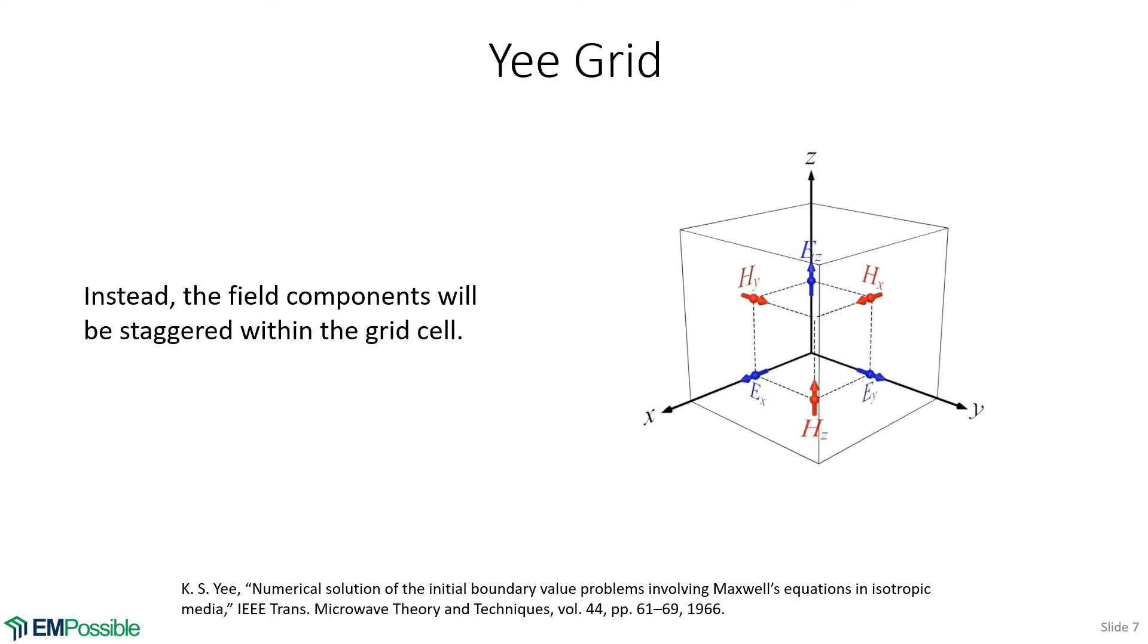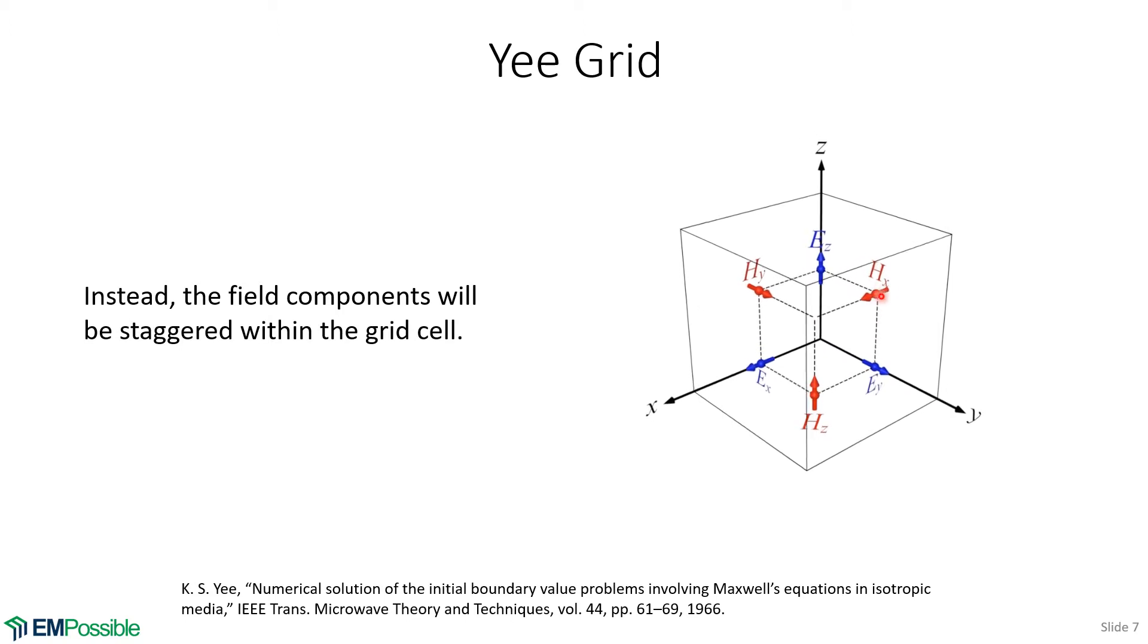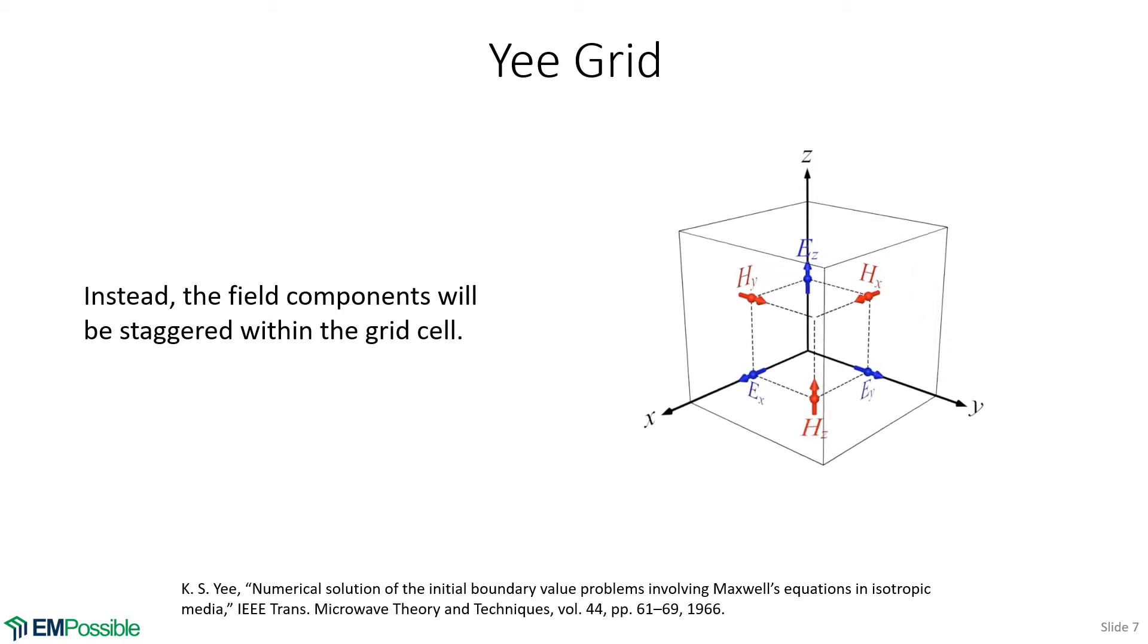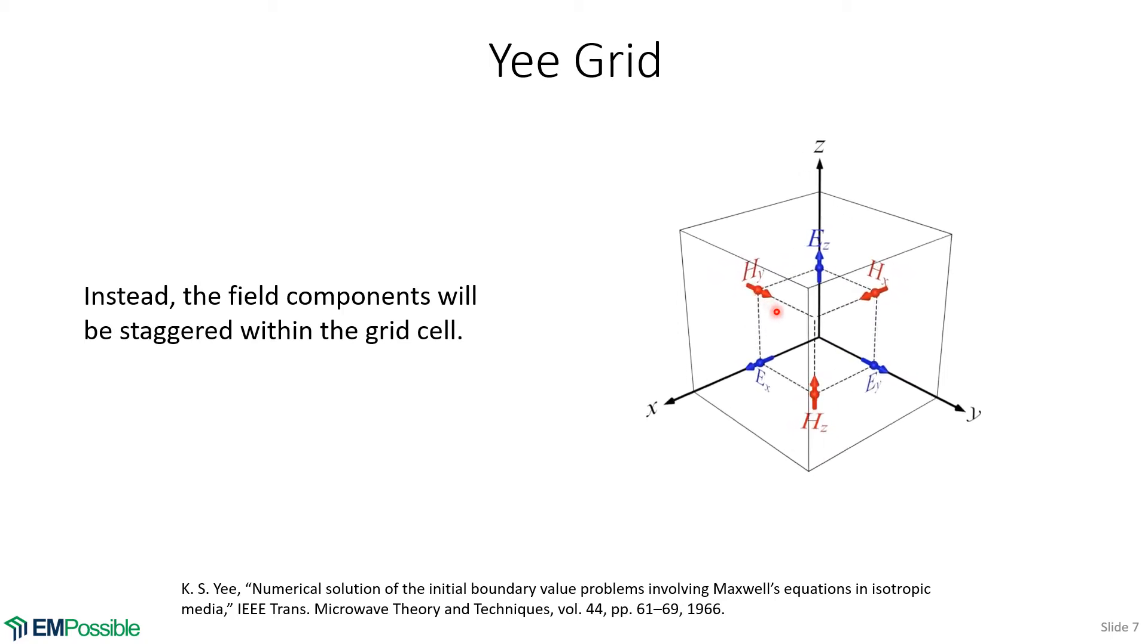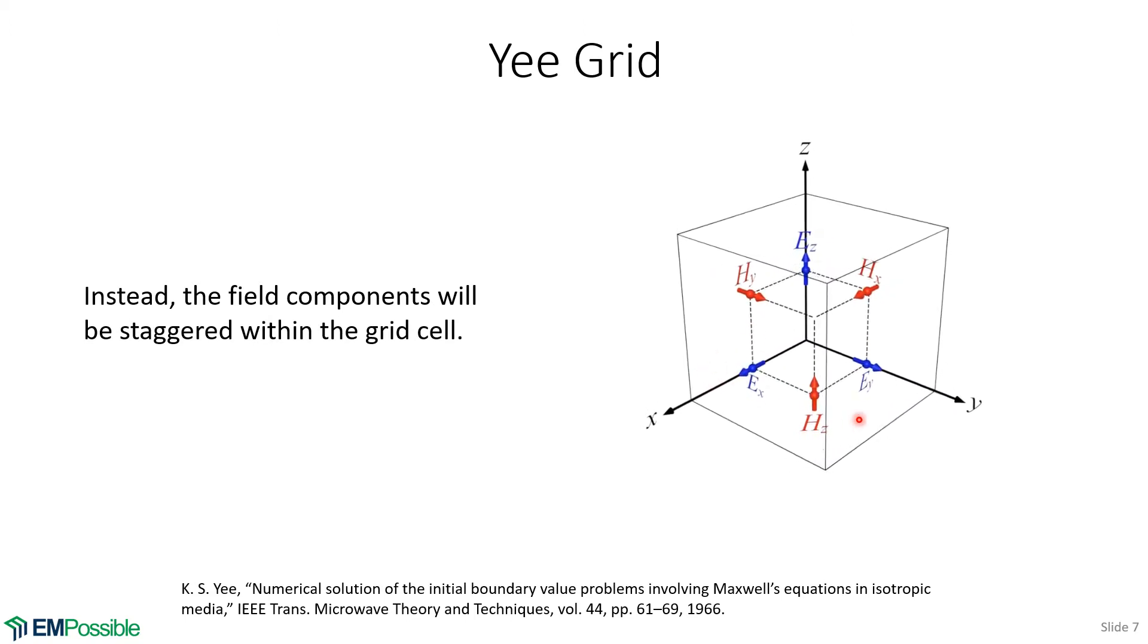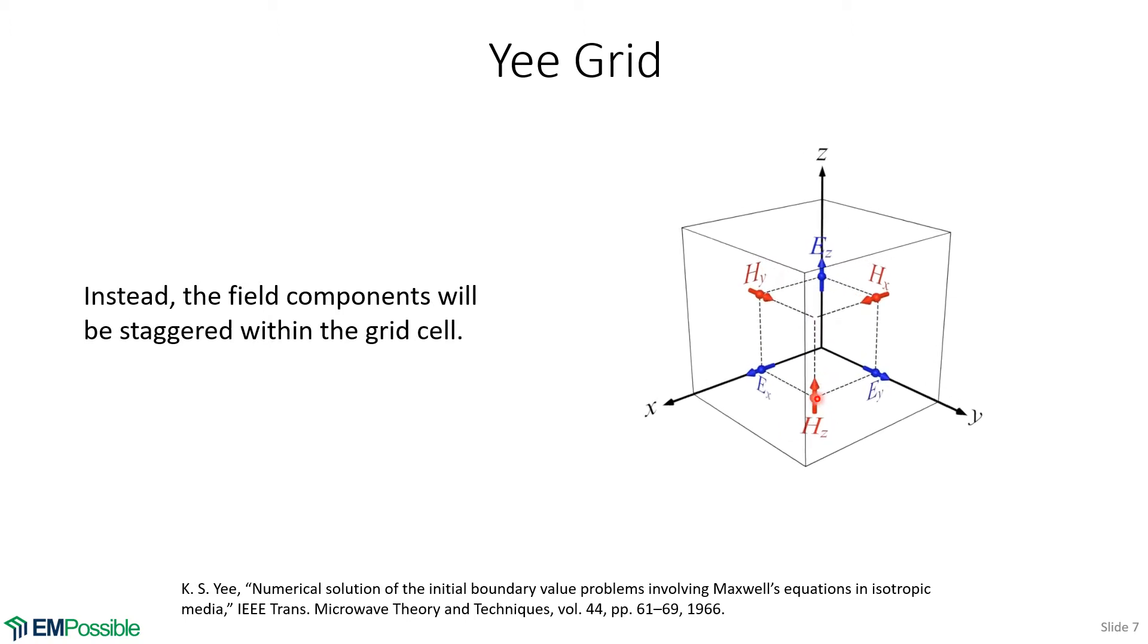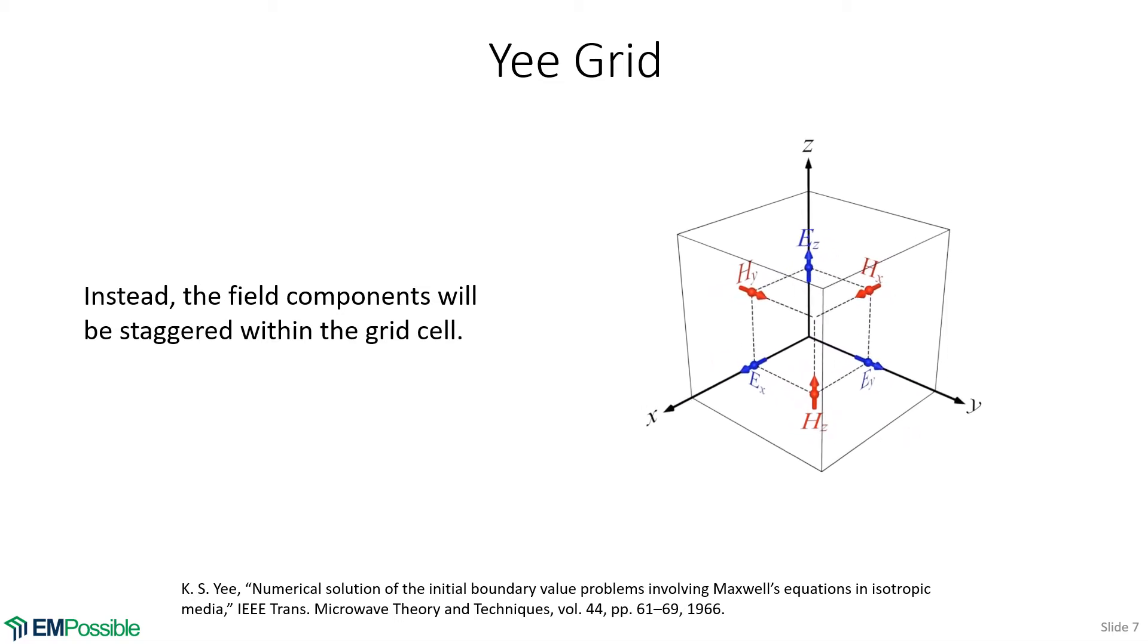The magnetic fields are done a little bit differently. The x component of the magnetic field is not offset along the x-axis, but it's offset along the y and z-axis. The y component is not offset along the y-axis, but it is offset in the z and x directions. And the z component of the magnetic field is not offset in the z direction, but it is definitely offset in the x and y directions.